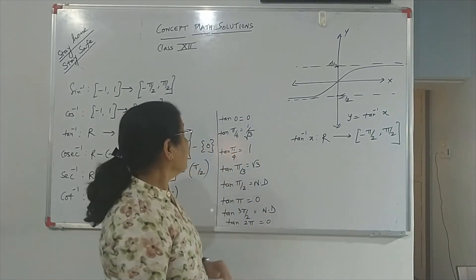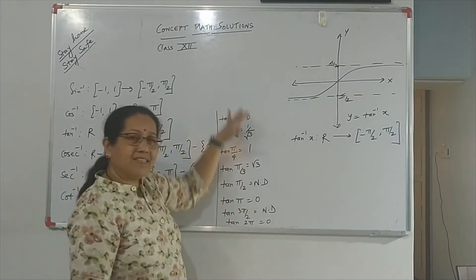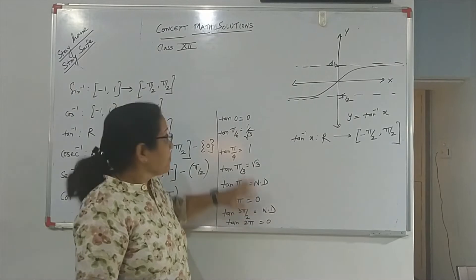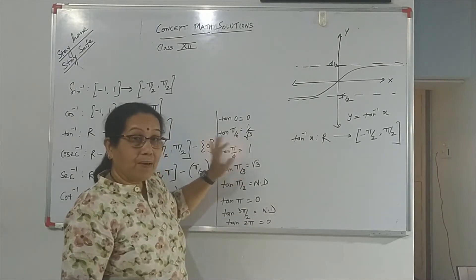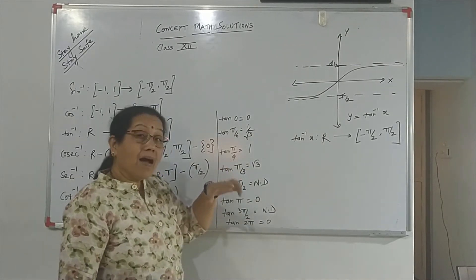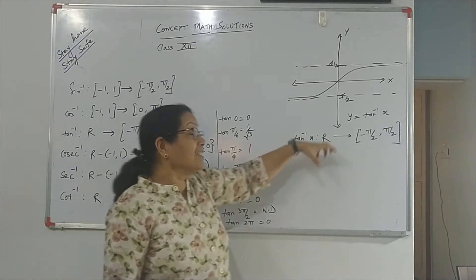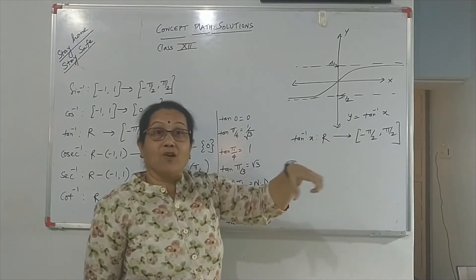If you remember, I have listed the value table for tan: tan 0 is 0, tan π by 6 is 1 by root 3. I am discussing why we restrict the domain and range for a trigonometry function.